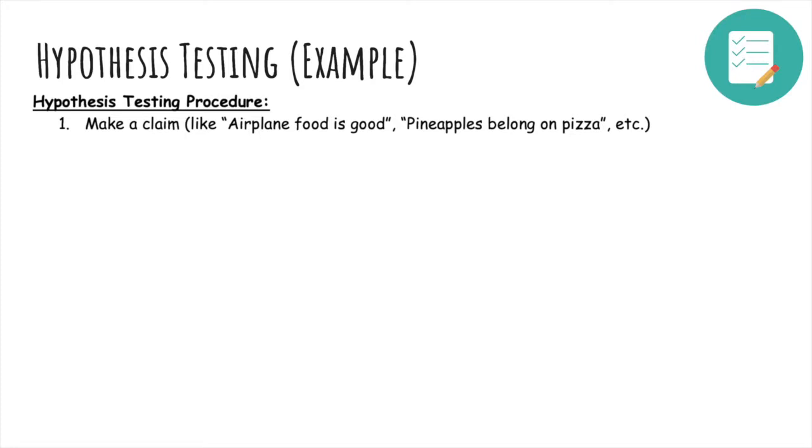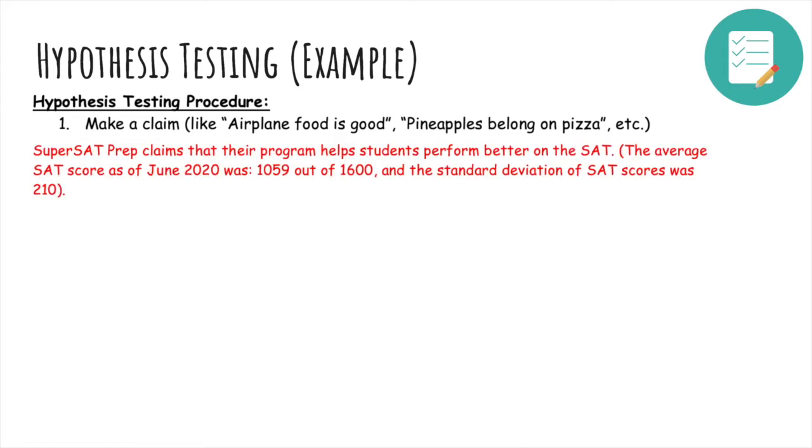So the formal procedure is as follows. We make a claim, like all airplane food is good or pineapples belong on pizza. So ours will be that SuperSAT Prep claims that their program helps students perform better on the SAT. And we know that the average SAT score is 1059 out of 1600, with standard deviation 210.